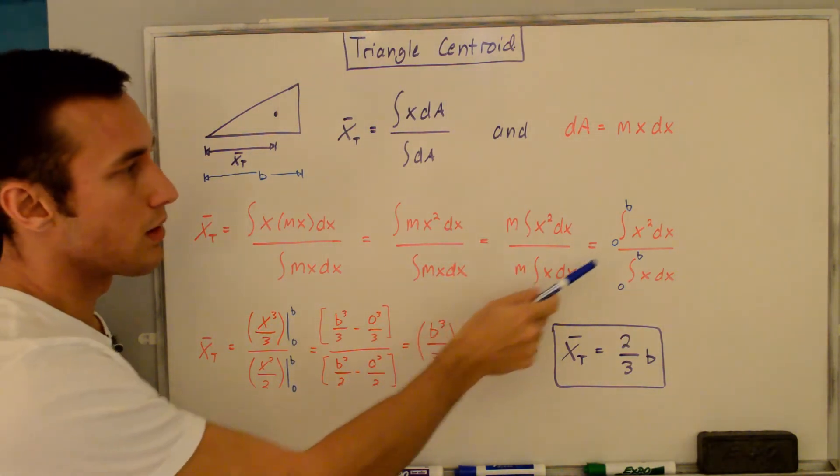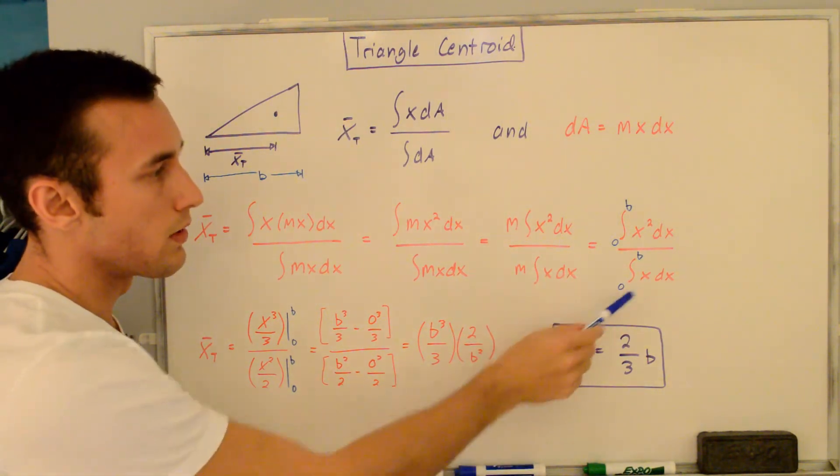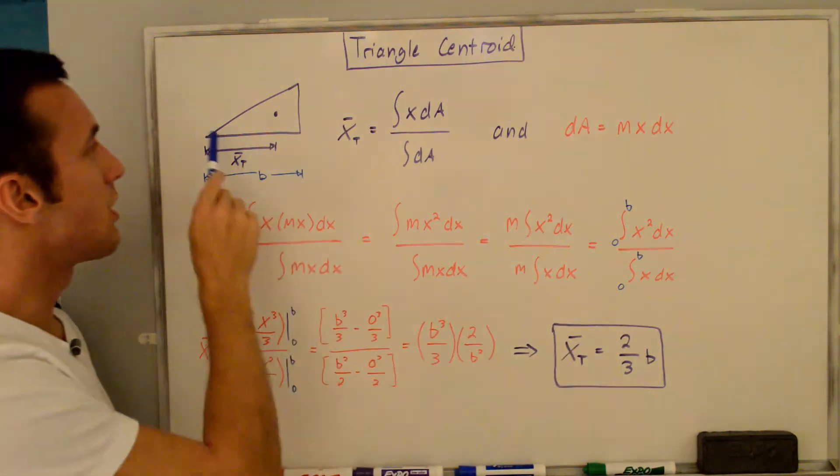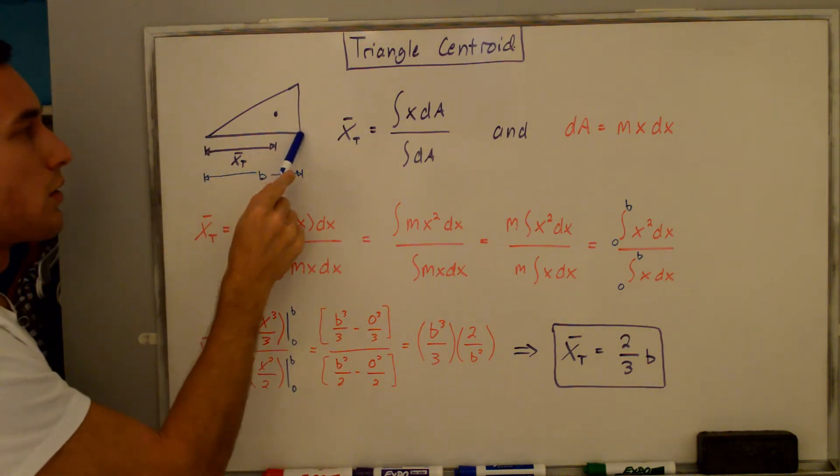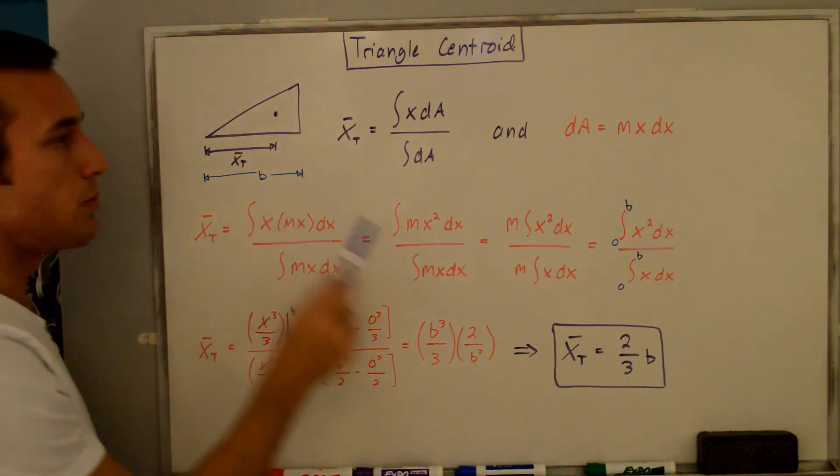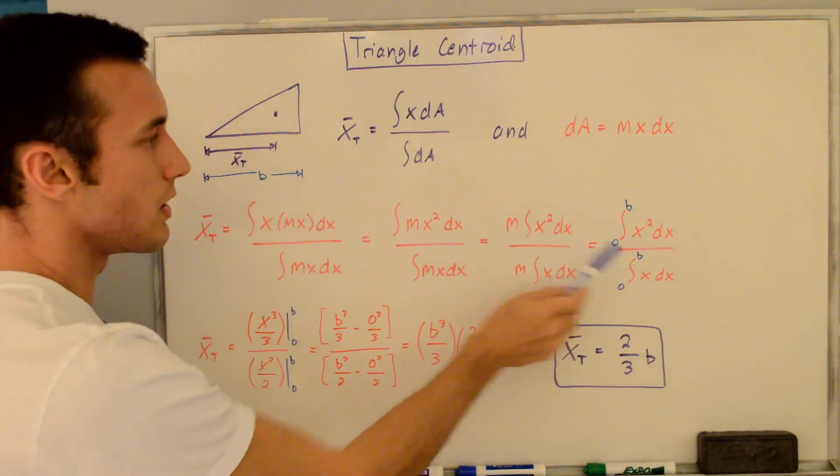They cancel out, and we're left with the integral of x² dx over the integral of x dx. To get the centroid of the total triangle, we integrate from the vertex to the right side, so from zero to b. That's why I've added these limits of integration here.